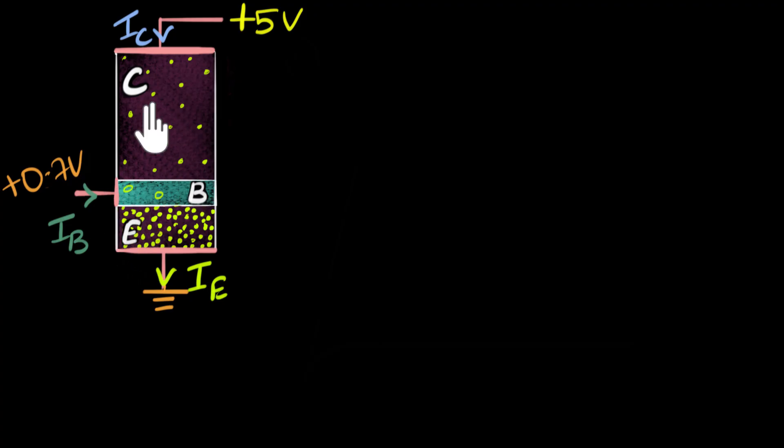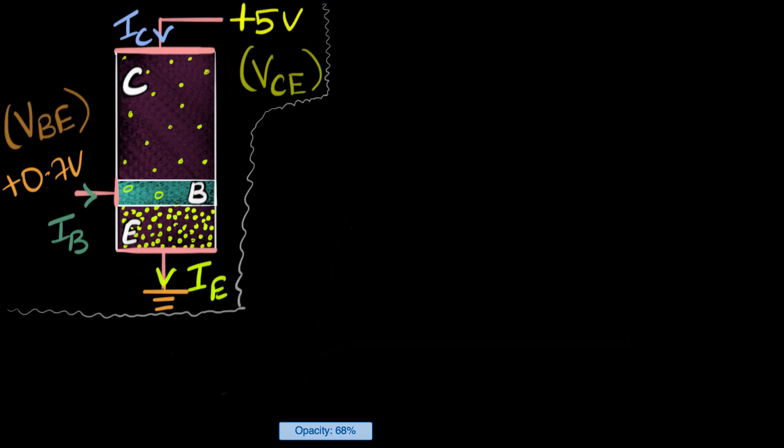We've already seen how we can make our NPN transistor work as an amplifier and we've seen these different currents. Your emitter base has to be forward biased and the collector base has to be reverse biased. This voltage connected to the base with respect to the emitter we call VBE, and we call this VCE. In a previous video we saw how changing VBE affects this current. We call that the input characteristics.